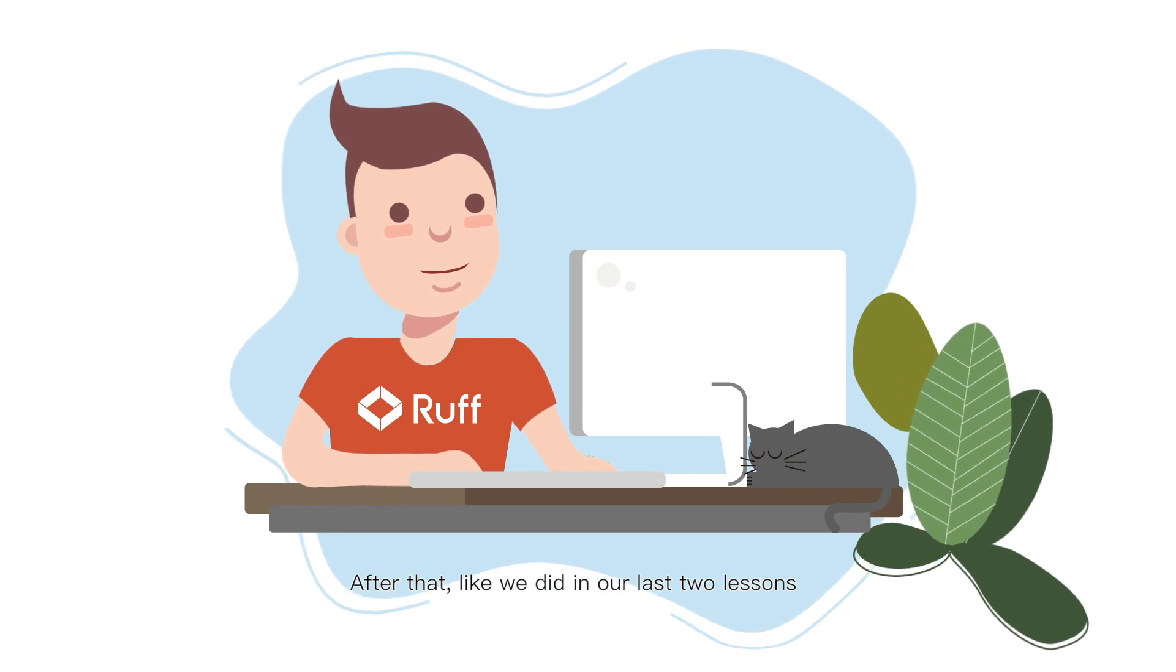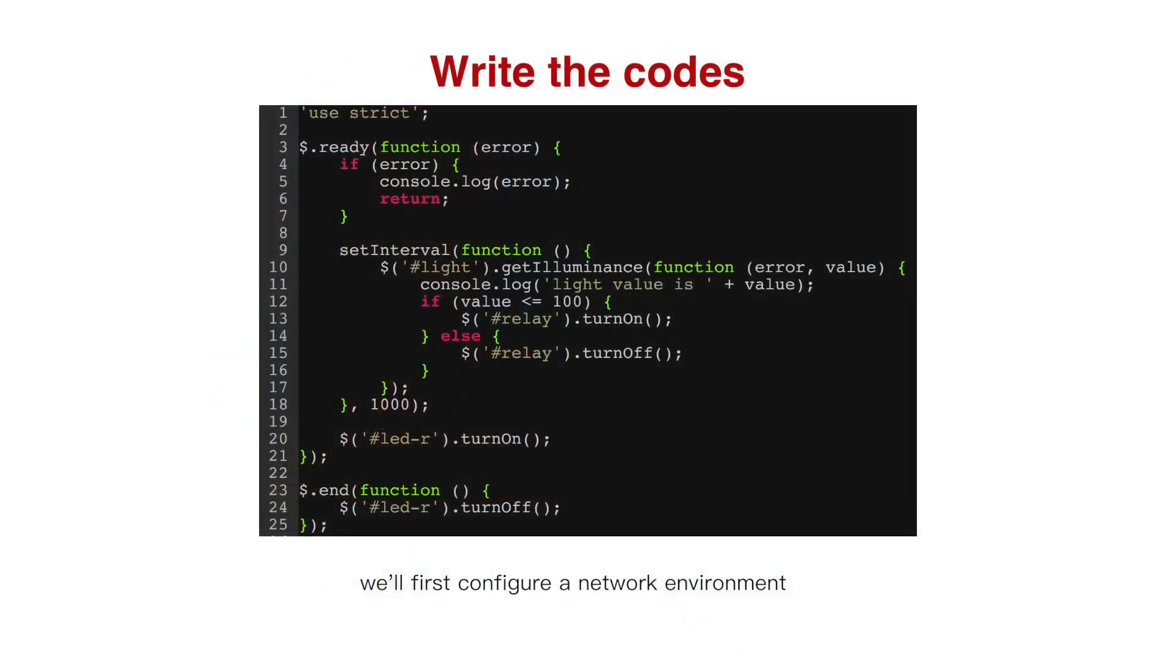After that, like we did in our previous two lessons, we'll first configure a network environment, and then use wrapdeploy s such a command to deploy the app onto the development board for running. As we see, its effect is like this.